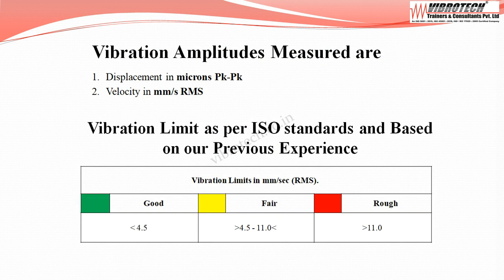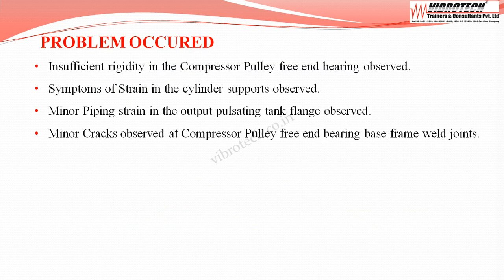Now onto the vibration limits. As per ISO standard and with previous experience: when the velocity falls below 4.50 mm/s rms, it is considered good. When the velocity falls between 4.50 to 11.0 mm/s rms, it is considered fair. When the velocity falls above 11.0 mm/s rms, it is considered rough.